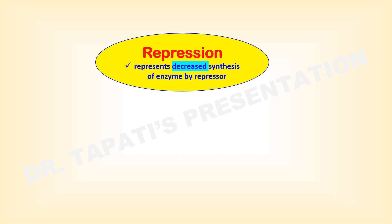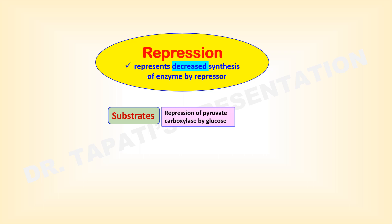Repression represents decreased synthesis of an enzyme by a repressor. Repression of an enzyme denotes inhibition of its synthesis, not of its activity. In many instances a substrate can repress the synthesis of an enzyme. For example, pyruvate carboxylase is a key enzyme in gluconeogenesis, synthesizing glucose from non-carbohydrate sources like pyruvate and amino acids. If sufficient glucose is available during the well-fed condition, there is no necessity for its synthesis; this is achieved through repression of pyruvate carboxylase by glucose.